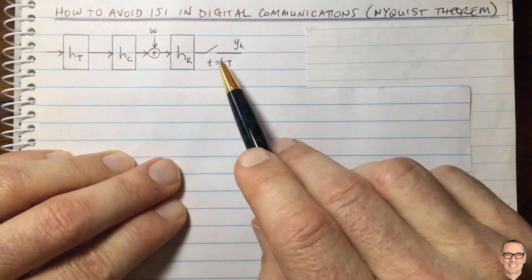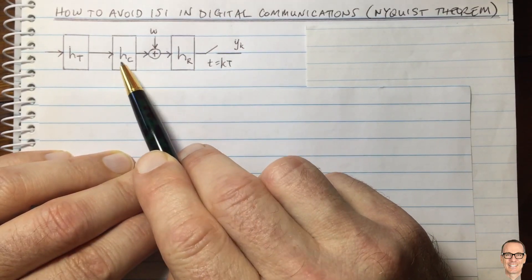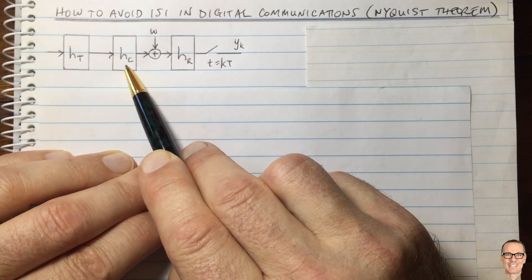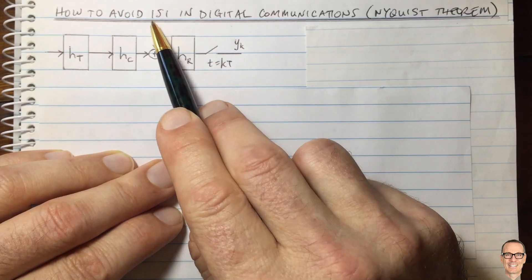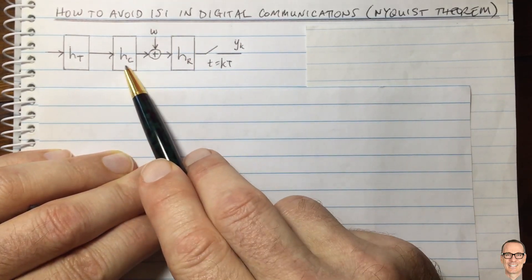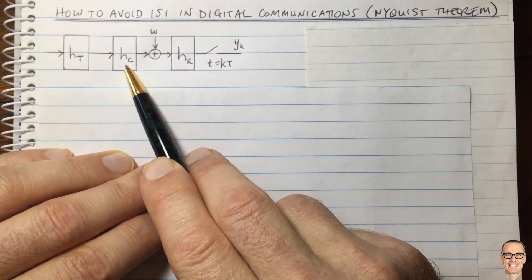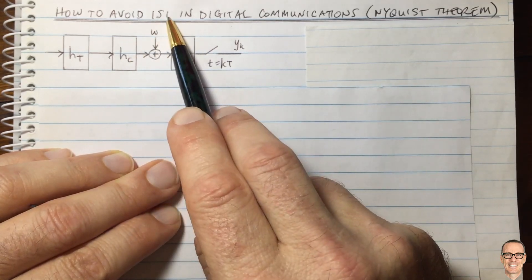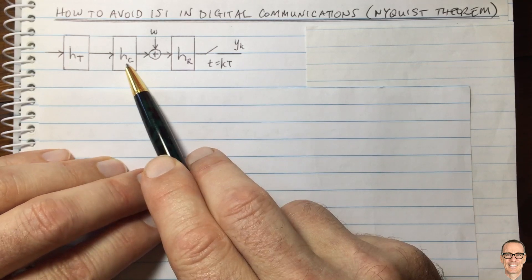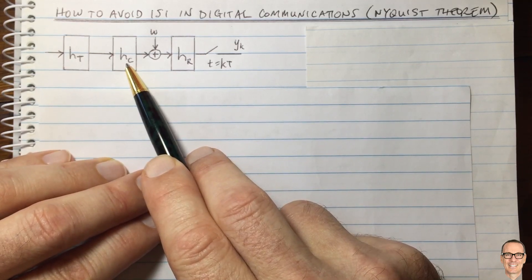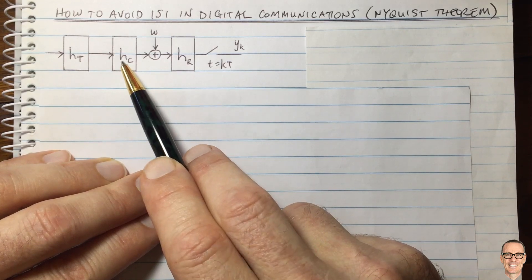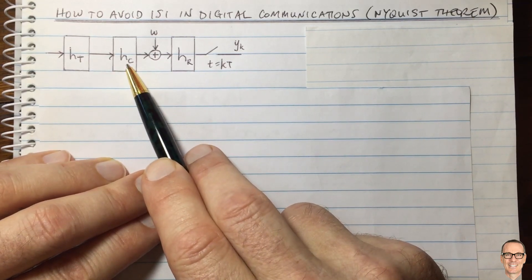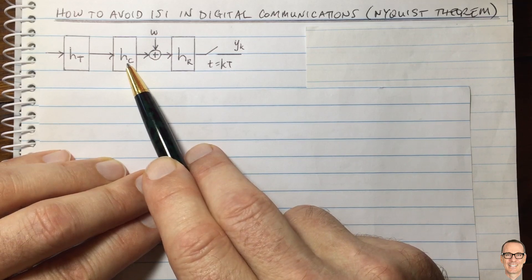Here's a communication system with a communication channel, represented by H subscript C, which is the impulse response of that channel. In an inter-symbol interference situation, that channel spreads out the signal in time, causing inter-symbol interference. For example, that might be multiple paths in a mobile communication system — a direct line-of-sight path and reflected paths that have bounced off buildings, coming in with a delay, spreading out the signal.